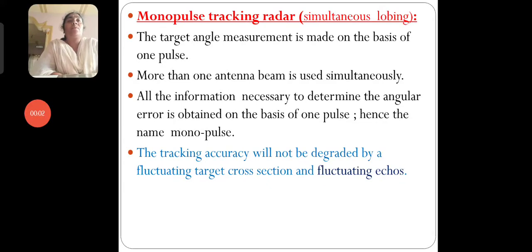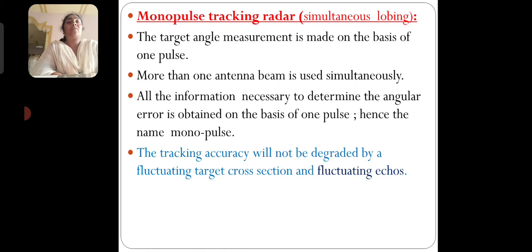We are going to discuss the monopulse tracking radar. The target angle measurement is made on the basis of one pulse, and more than one antenna beam is used simultaneously. All the information necessary to determine the angular error is obtained on the basis of one pulse — hence the name monopulse. The tracking accuracy will not be degraded by the fluctuation of target cross section and fluctuation echoes.